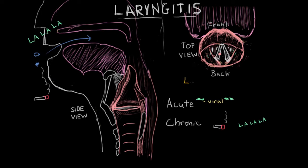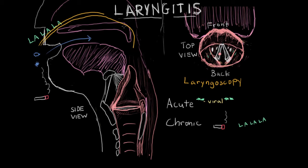Direct visualization of the larynx, known as laryngoscopy — visualization of the larynx — can confirm many different causes of laryngitis. To perform laryngoscopy, a physician inserts a long tube-like structure with a camera on the end, allowing a direct view from above of the larynx and associated structures.